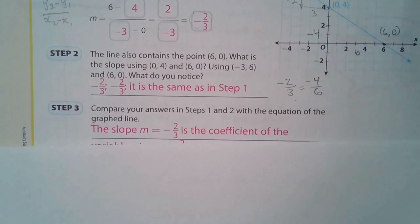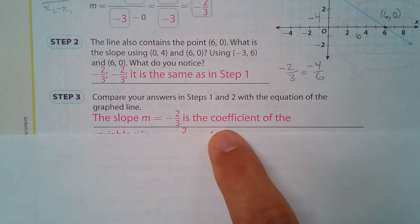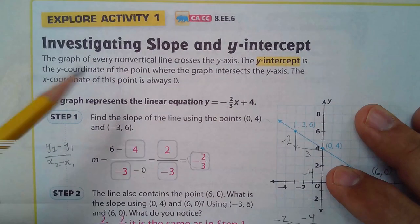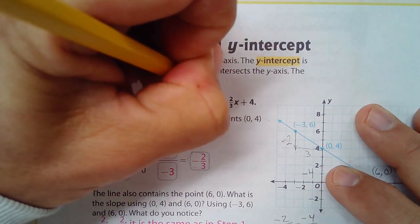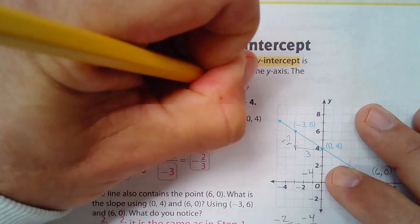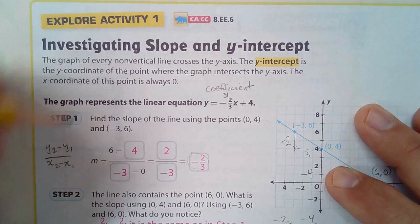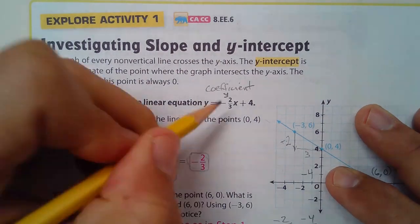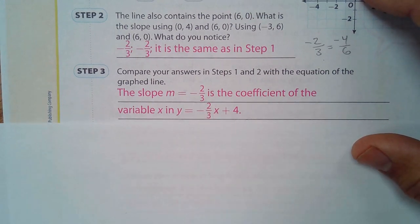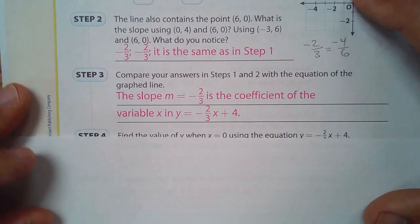Compare your answers. The slope negative two-thirds is the coefficient. The coefficient is that number in front of the x. So the coefficient right here is negative two-thirds right there. Coefficient.